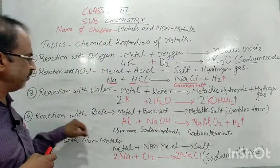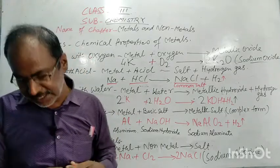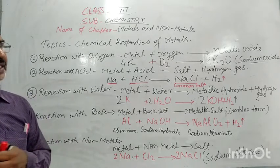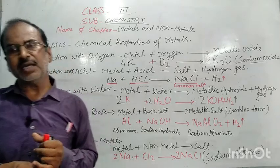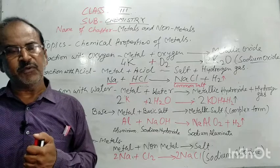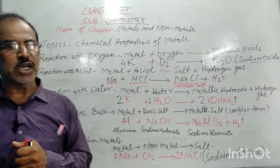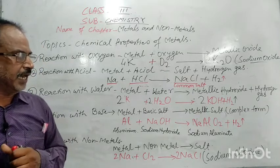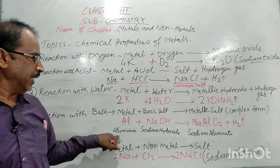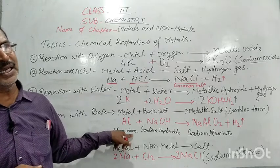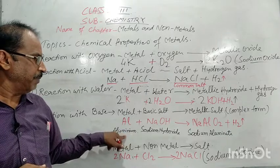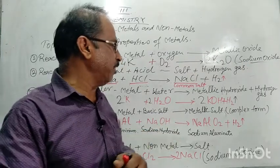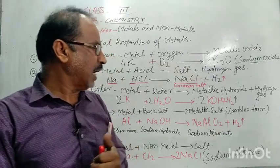The fourth example: reaction with base. When any metal reacts with a base, it forms a metallic basic salt. Common metals do not react; it is the highly reactive metals and moderate metals — for example, aluminium and zinc — that react with base to form a salt. Aluminium reacts with sodium hydroxide to form sodium aluminate and hydrogen gas. Aluminium is a moderate metal — neither very reactive nor unreactive, it is a middle-class metal.